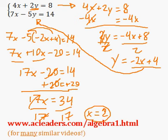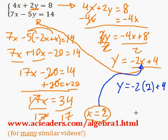Now I just need to solve for y. And to do that, I'm just going to plug in the 2 right here for x. So y is negative 2 times 2 plus 4, negative 2 times 2 is 4, negative 4.